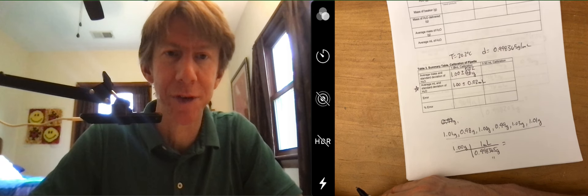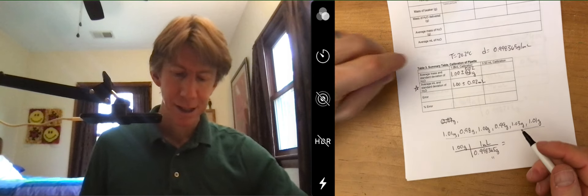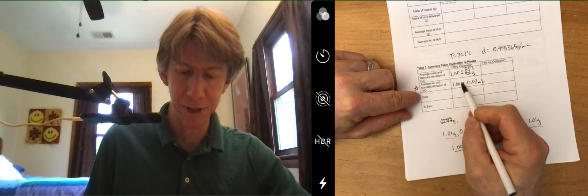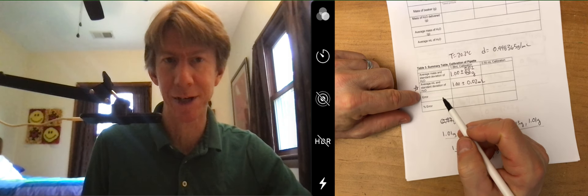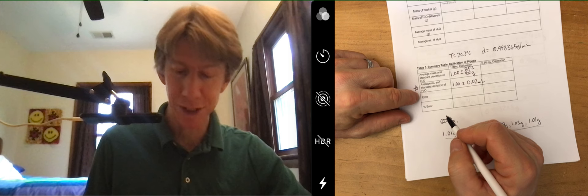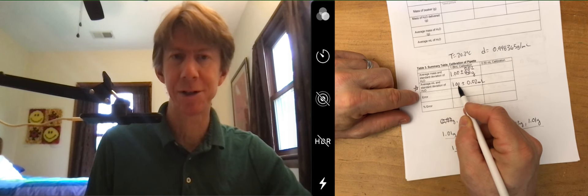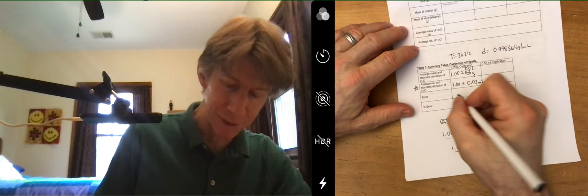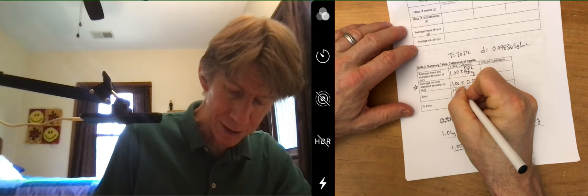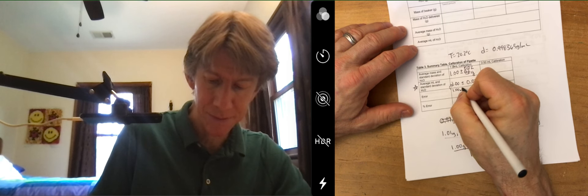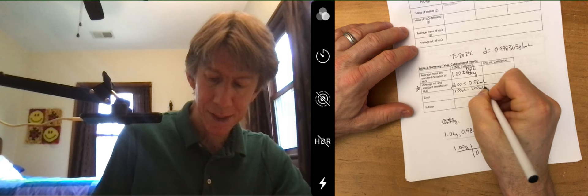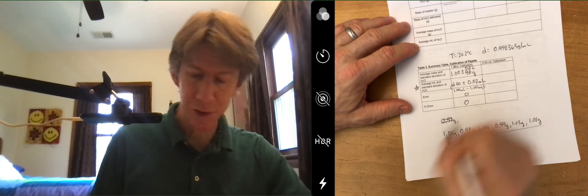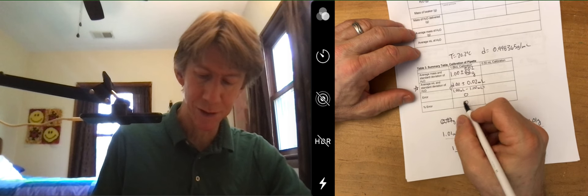Now error is a new calculation. Error is our experimental value minus the correct value. I have been very fortunate here that my average value is 1.00 and my correct value. So this is going to be 1.00 milliliters minus 1.00 which is my correct value and I get 0 and technically to 3 sig figs, 0 divided by the correct value would still be 0 percent error.